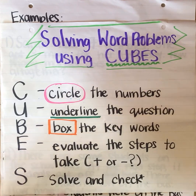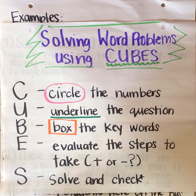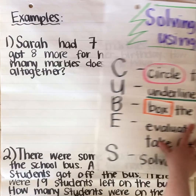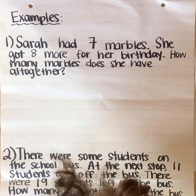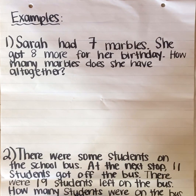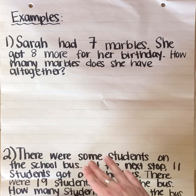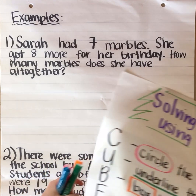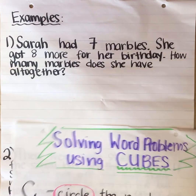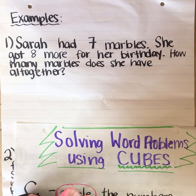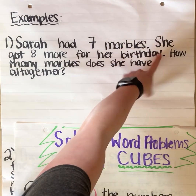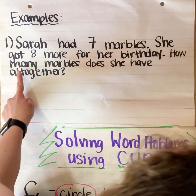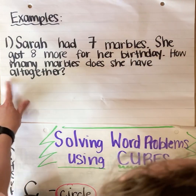Okay, so now that I've told you what CUBES means let's actually look at a couple of examples and use CUBES to help us solve them. I'm just going to move that to the side and we'll refer back to it when we need to. The first question says: Sarah had seven marbles. She got eight more for her birthday. How many marbles does she have all together?